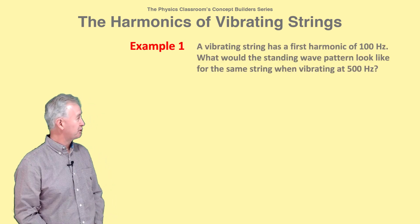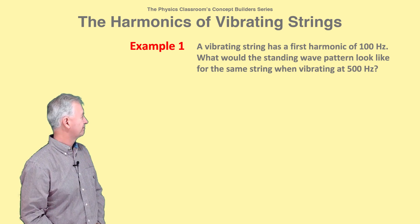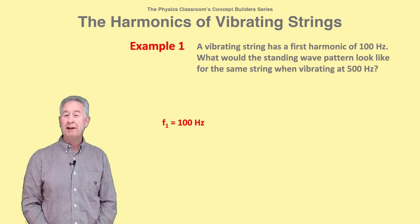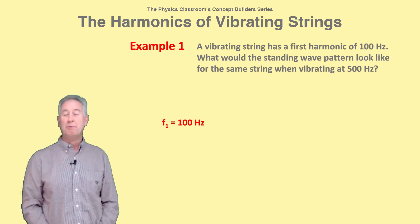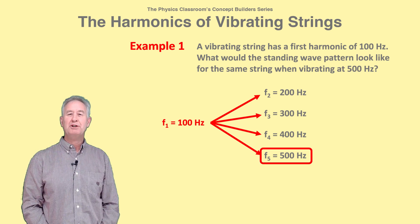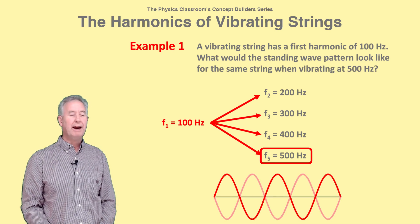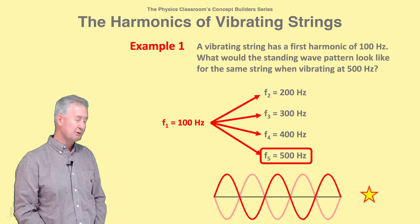Here is the first of two examples. The first harmonic has a frequency of 100 hertz. Other harmonic frequencies are whole number multiples of 100 hertz. The 500 hertz harmonic has five times the frequency and is thus the fifth harmonic, so the pattern would have five antinodes, like this one.